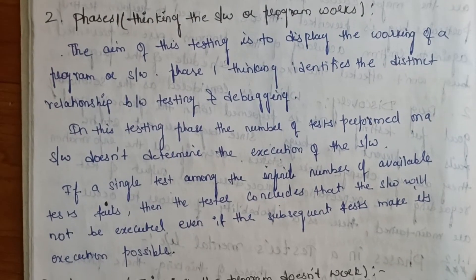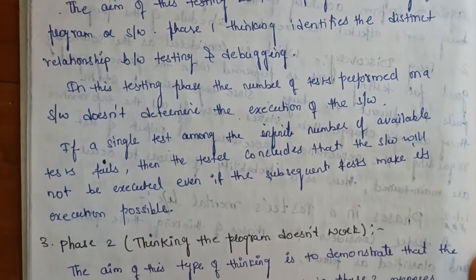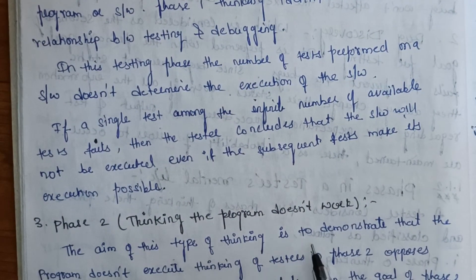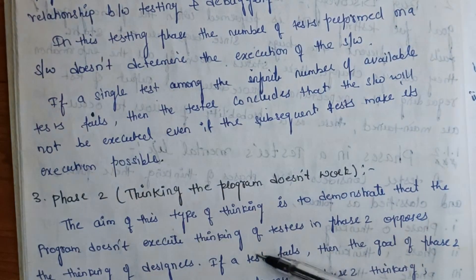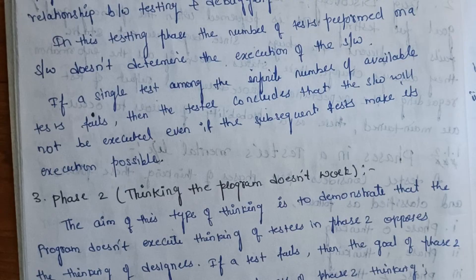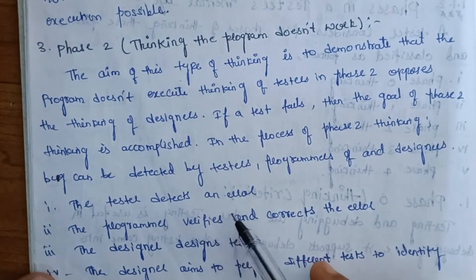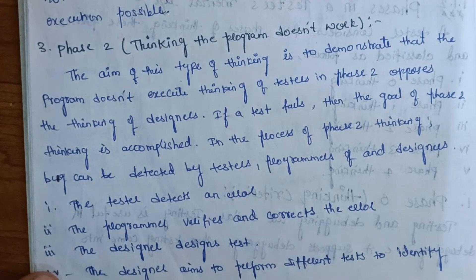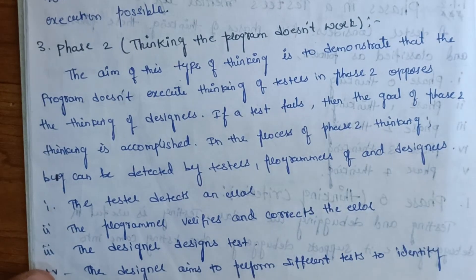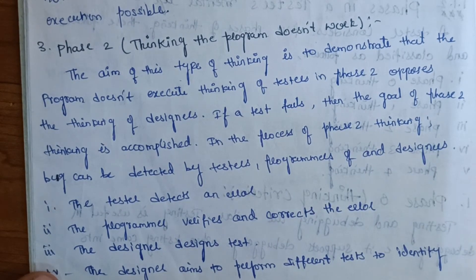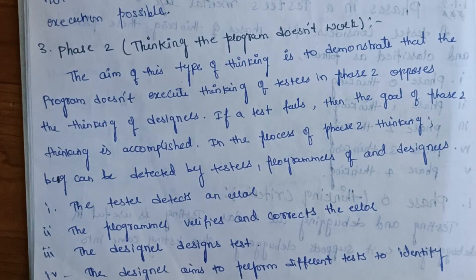Phase 2: the aim of this type of thinking is to demonstrate that the program does not execute. The thinking of testers in Phase 2 opposes the thinking of the designers. If a test fails, then the goal of Phase 2 thinking is accomplished. The tester detects an error, the programmer verifies and corrects the error. The designer aims to perform different tests to identify different errors.